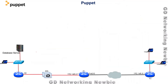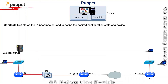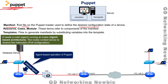The second configuration management tool is Puppet. Again, we download software and install it on a computer. The important file in Puppet is the manifest — a text file that contains the desired configuration and specific instructions for the devices. Resources, classes, and modules are components of the manifest file, and templates serve the same role as in Ansible.